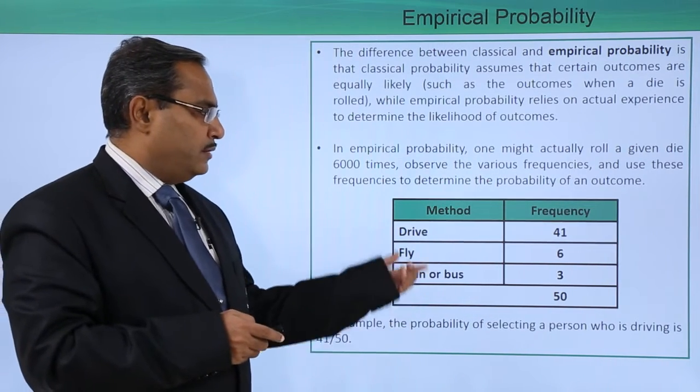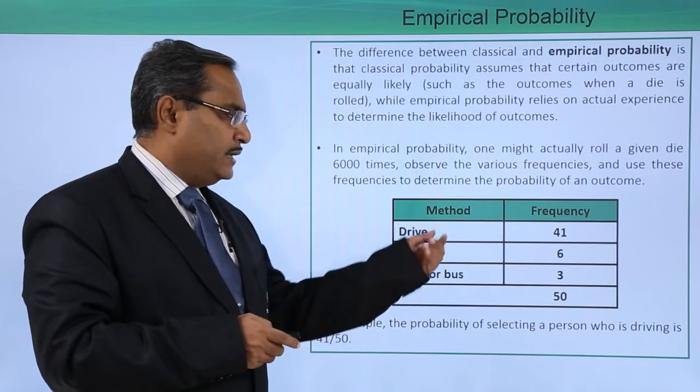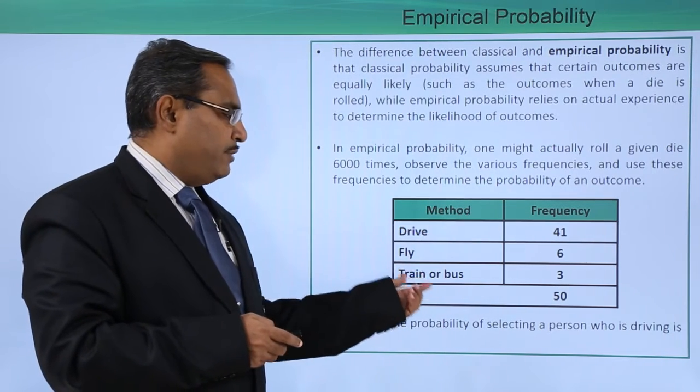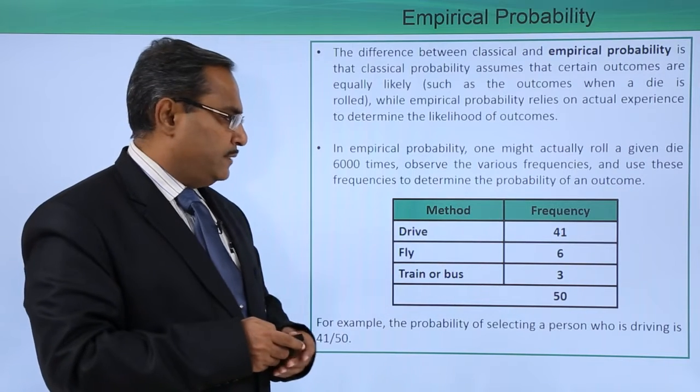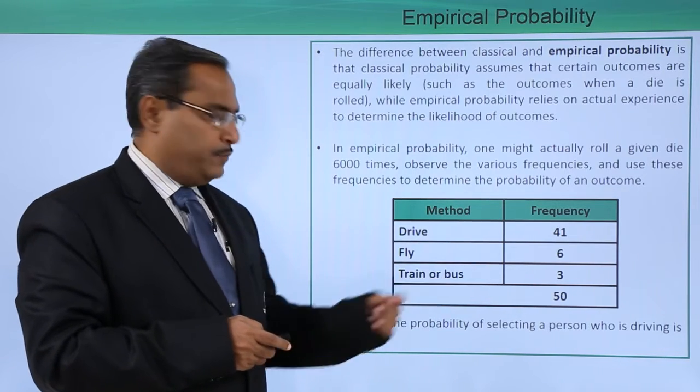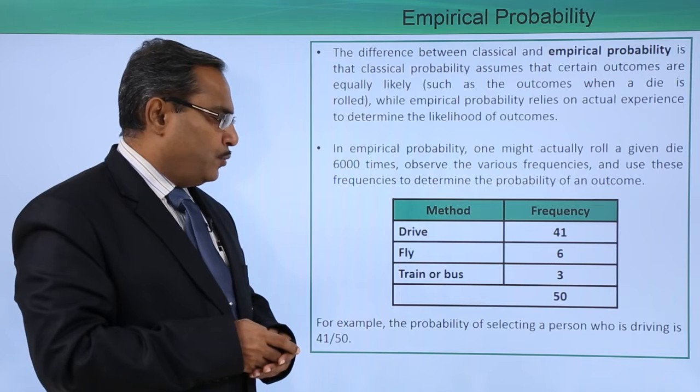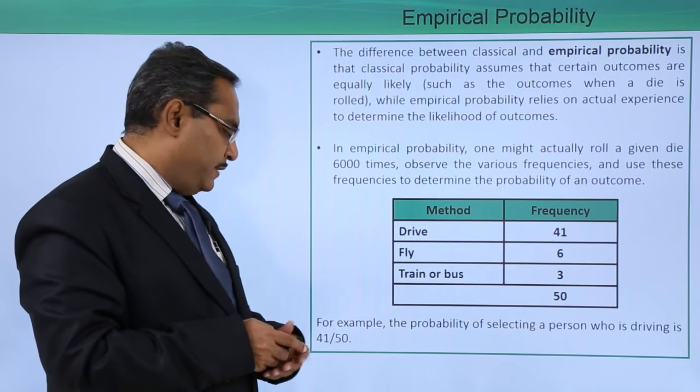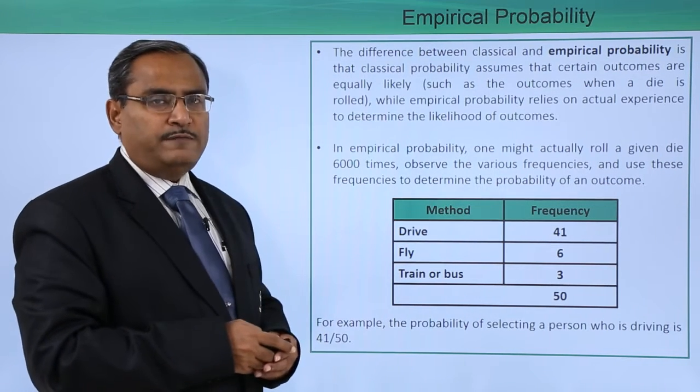Just consider this one: drive 41 is the frequency, fly 6 is the frequency, and train or bus 3 is the frequency. In total, the value is 50. For example, the probability of selecting a person who is driving is 41 by 50.